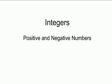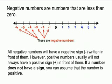This video is going to go over positive and negative numbers. What are negative numbers? Negative numbers are numbers that are less than zero. For instance, all negative numbers will have a negative sign written in front of them.